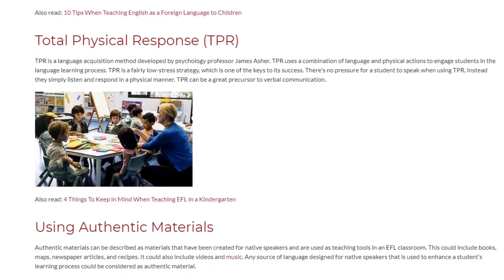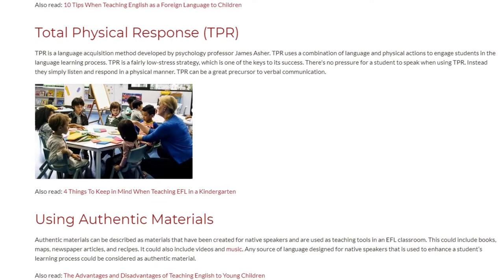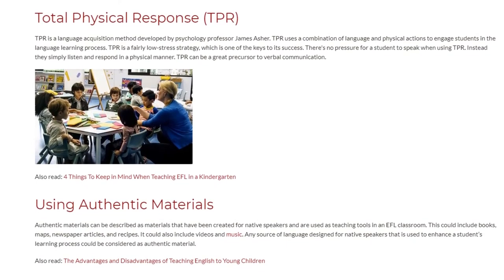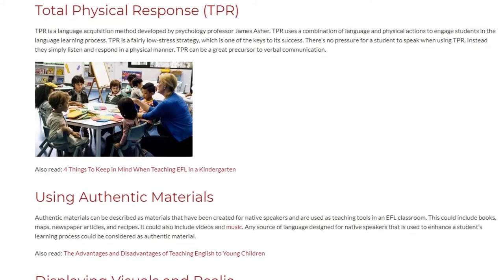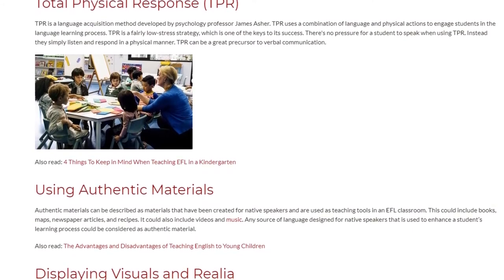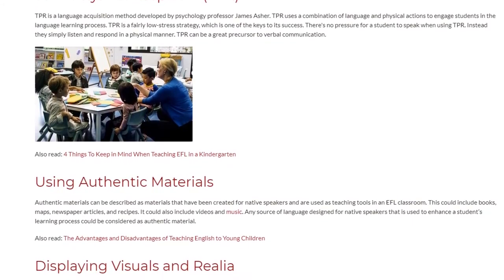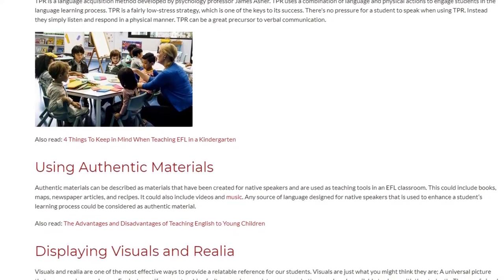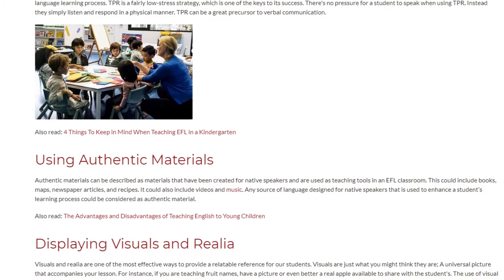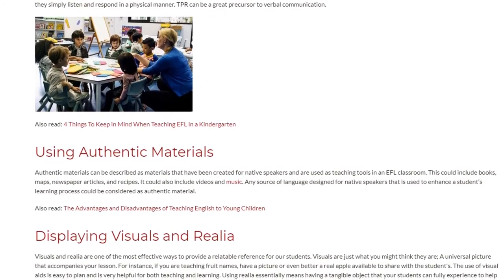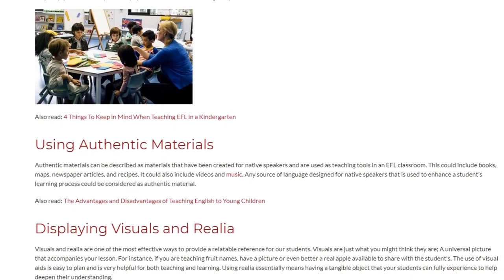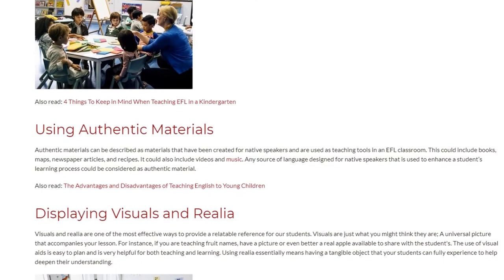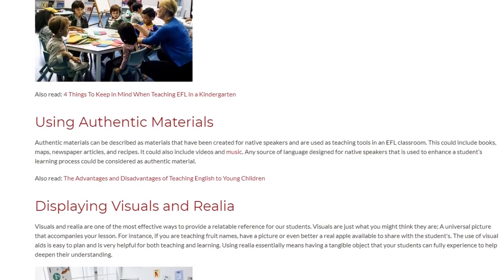Using Authentic Materials. Authentic materials can be described as materials that have been created for native speakers and are used as teaching tools in an EFL classroom. This could include books, maps, newspaper articles, and recipes. It could also include videos and music. Any source of language designed for native speakers that is used to enhance a student's learning process could be considered as authentic material.